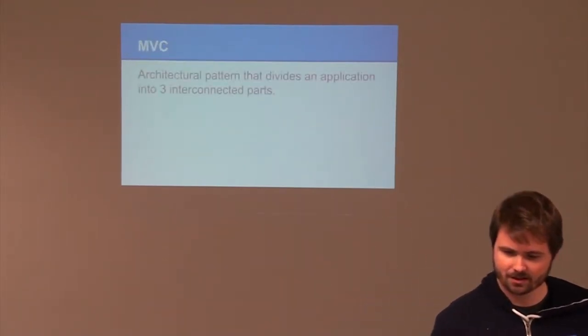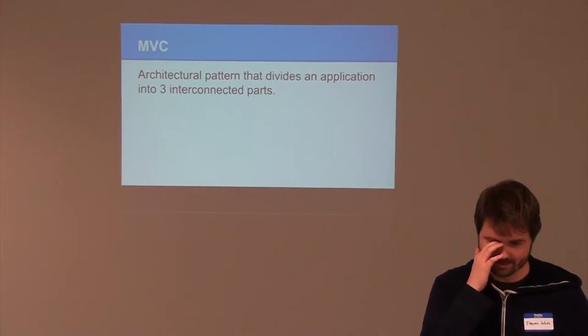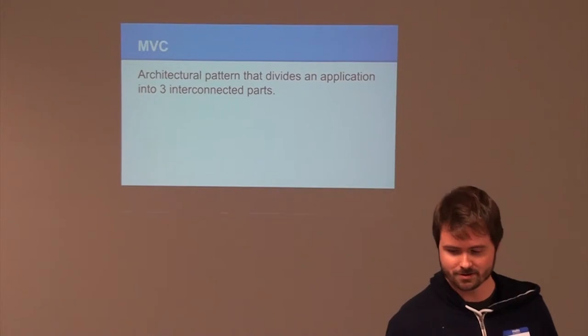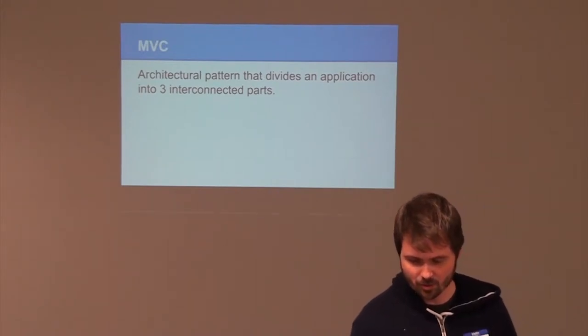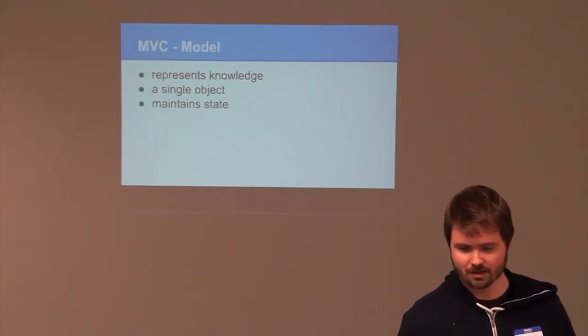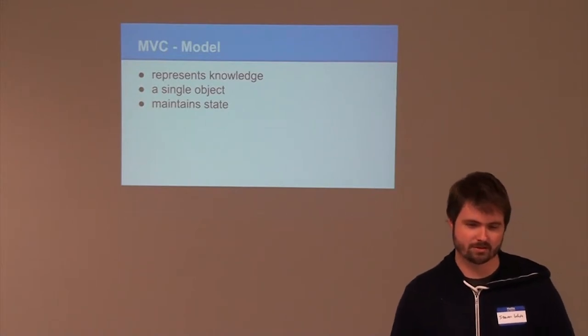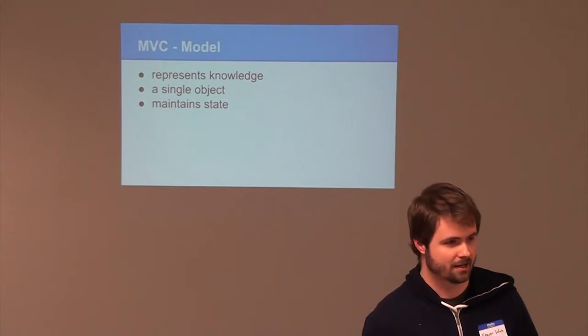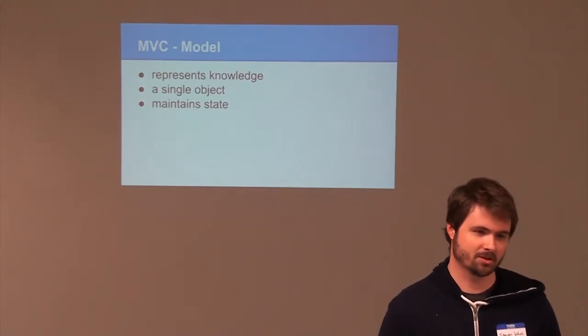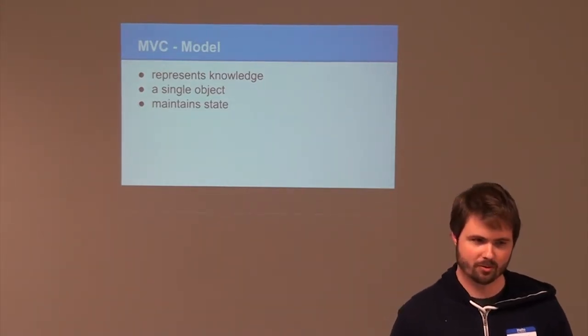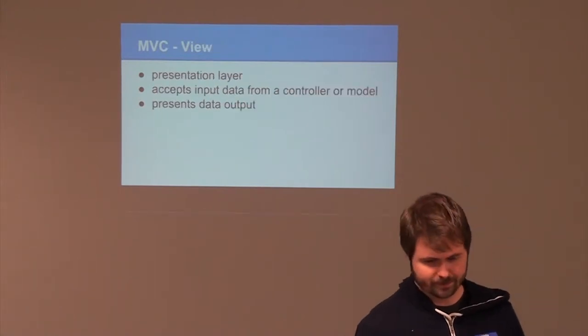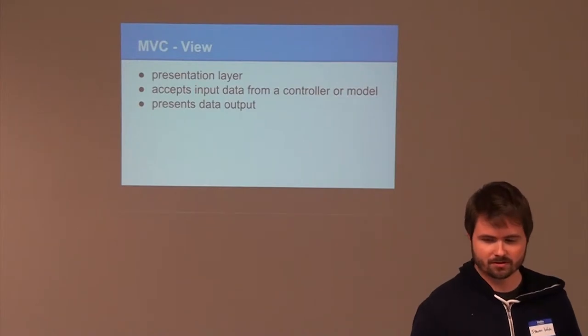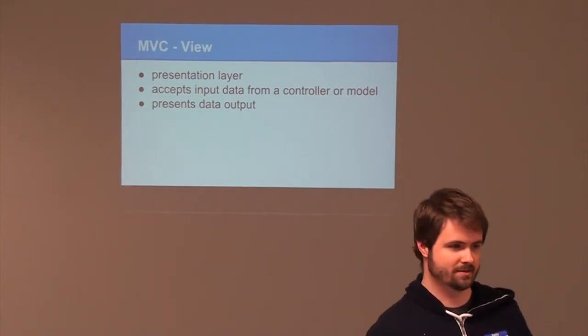So what is MVC? MVC is an architectural pattern that divides an application into three interconnected parts. That's the Wikipedia dictionary version of it. The model represents your logic, it's knowledge, it's a single object, and it maintains state. Again, I said we tend to throw other things into the model, specifically, normally pair it with our database layer. The view is the presentation layer, it accepts input from the controller or model, and it presents data output.